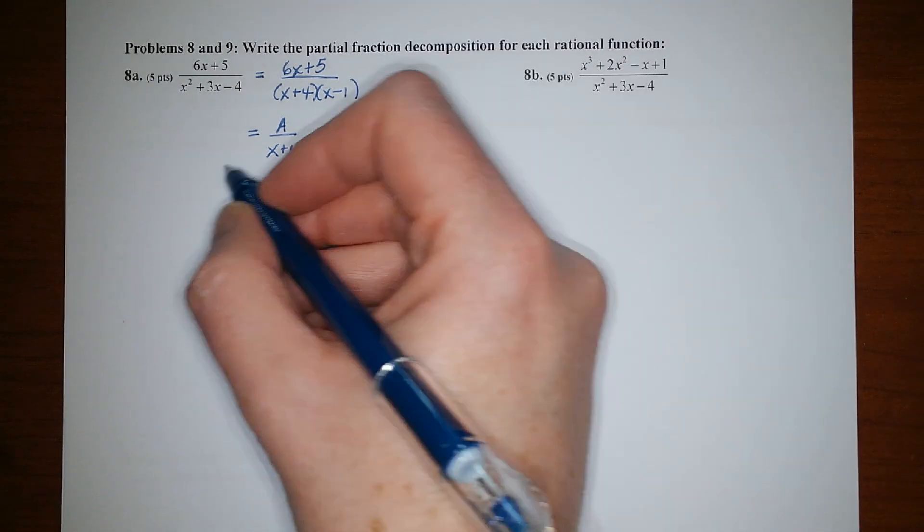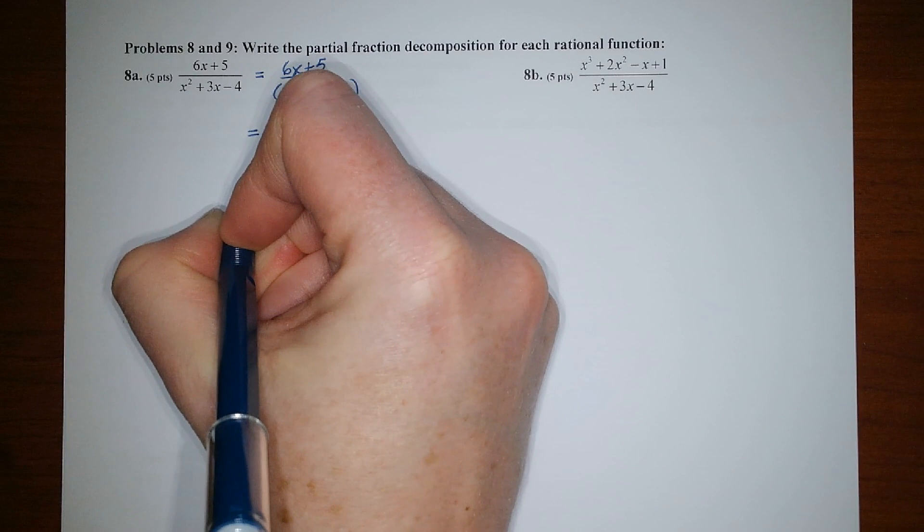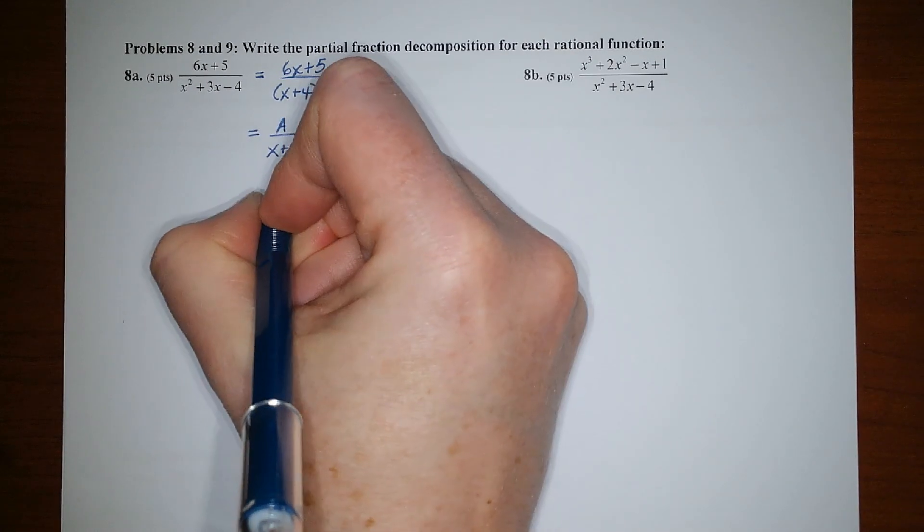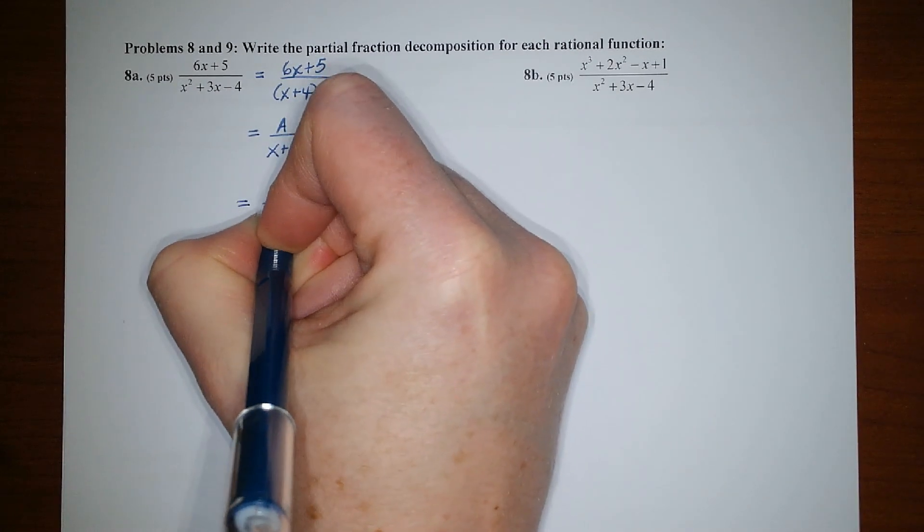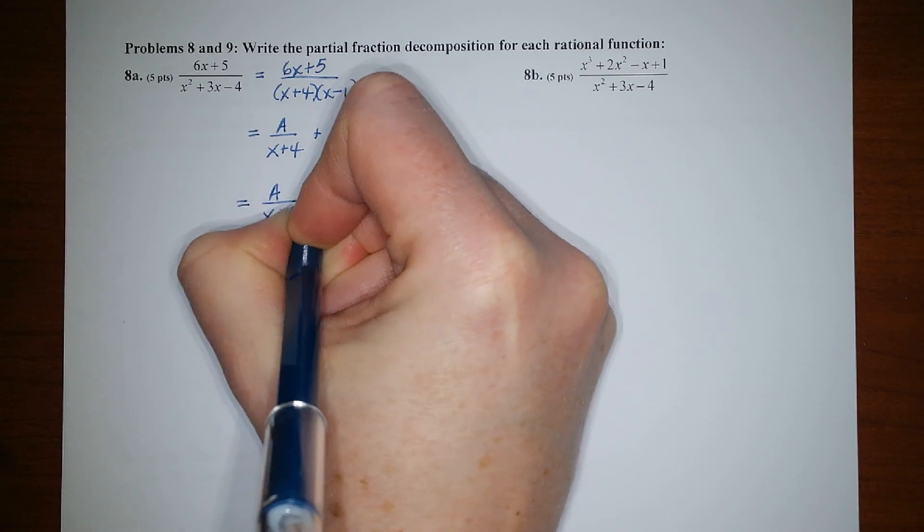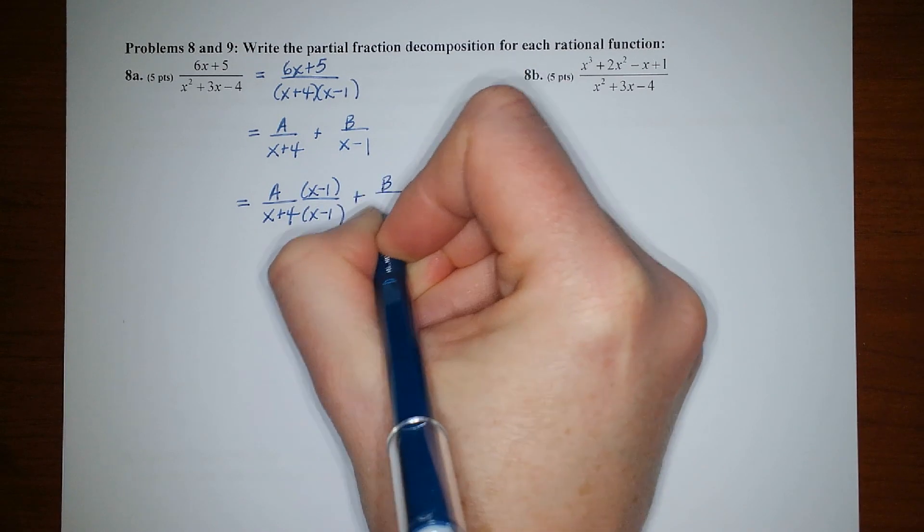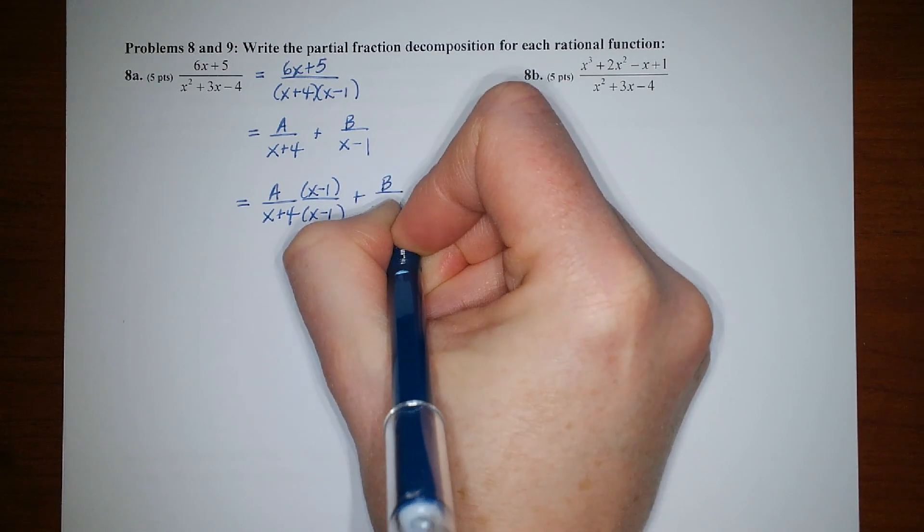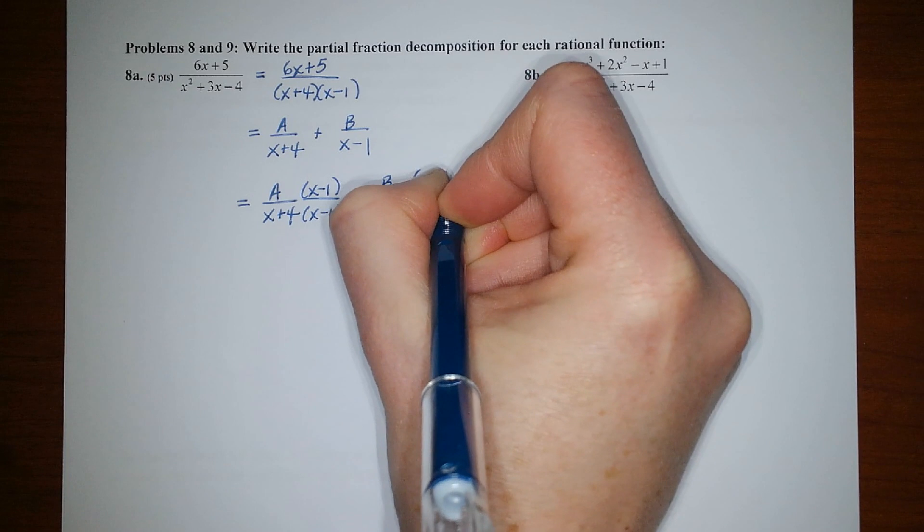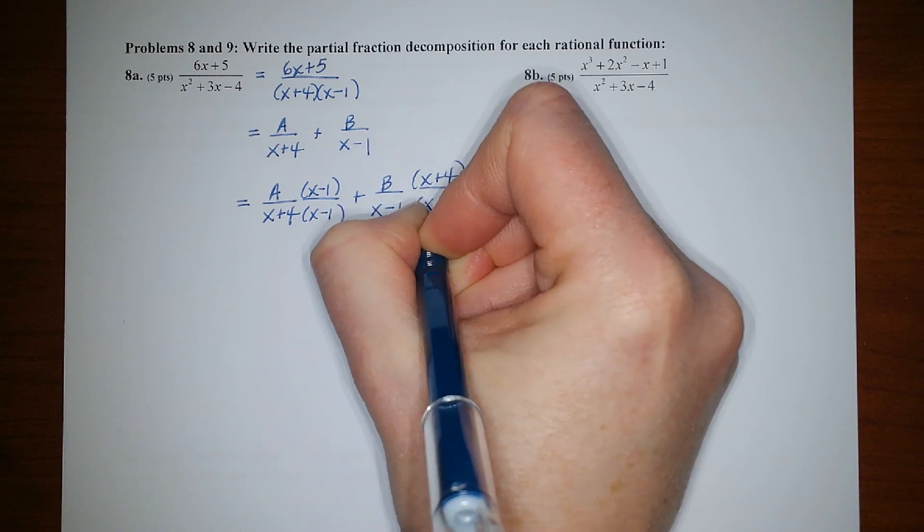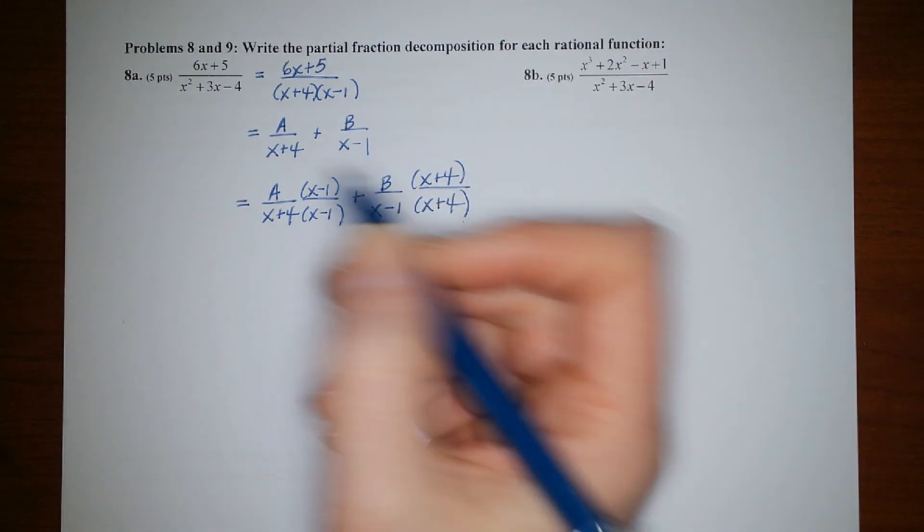So anyway, from here, I would switch modes to acting like I'm adding fractions. So multiplying the first fraction by this version of 1 and multiplying the second fraction by this version of 1. Like so.